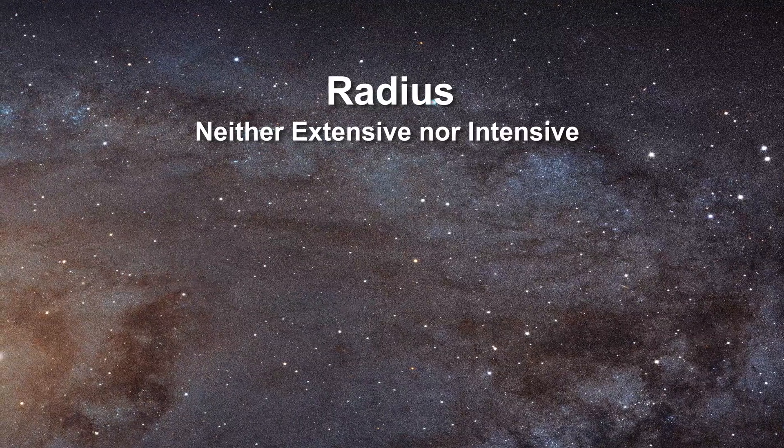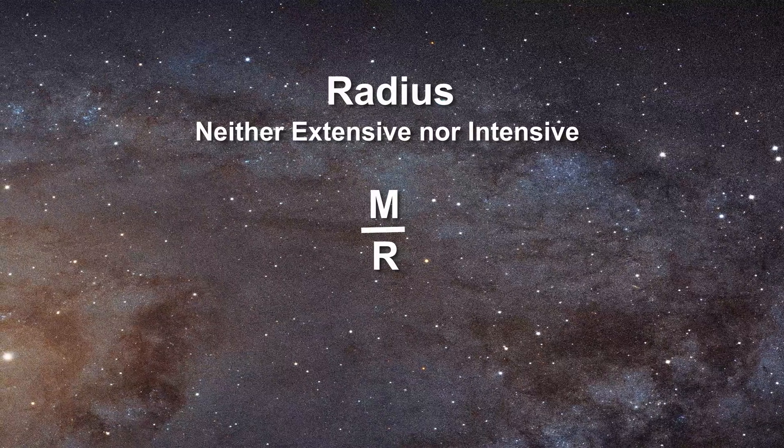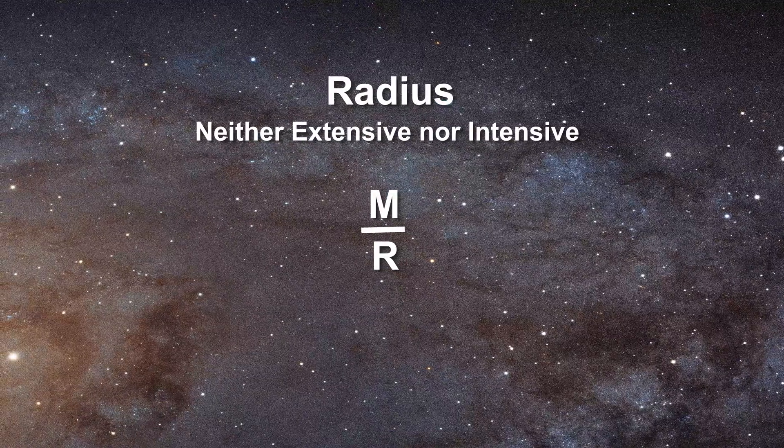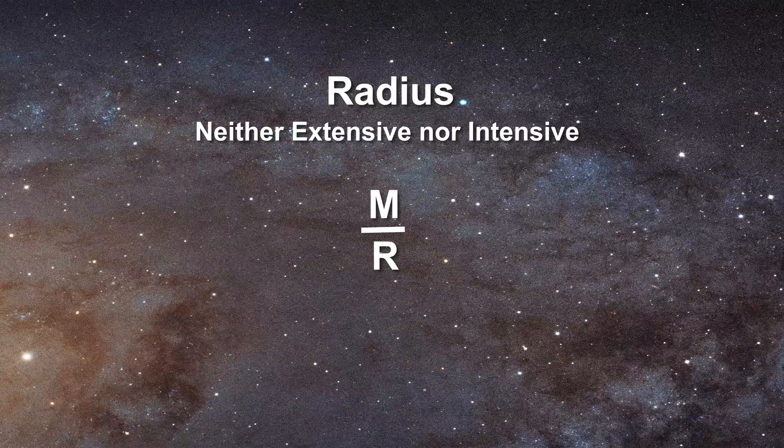Conversely, if you divide mass by radius, one does not obtain an extensive property or an intensive property. This is a central point and a fatal flaw in many equations in astronomy.